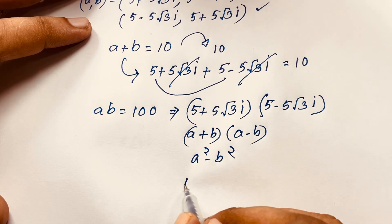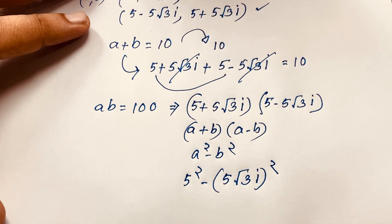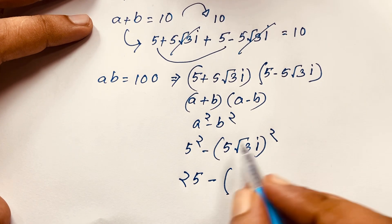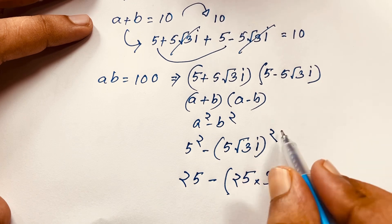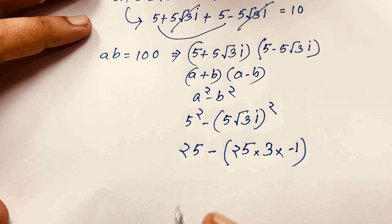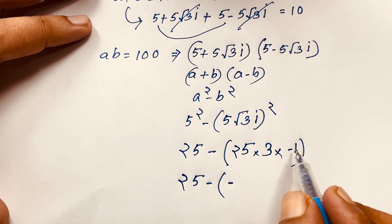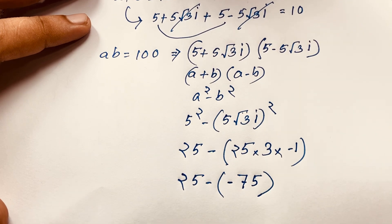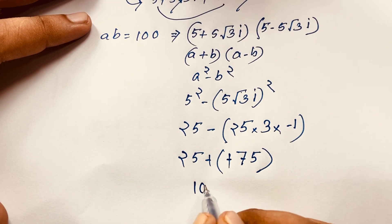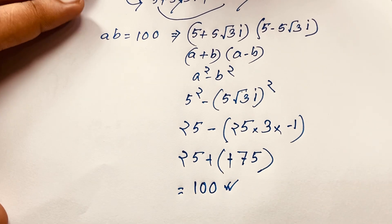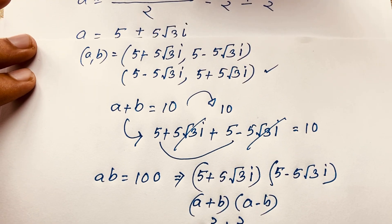So it becomes 5² minus (5√3 i)² equals 25 minus (25 times 3 times i²) equals 25 minus (75 times negative 1) equals 25 plus 75 equals 100. Left-hand side equals right-hand side. Our answer is verified. Thank you all — if you enjoyed this video, please subscribe to the channel for more interesting videos. Goodbye, take care!